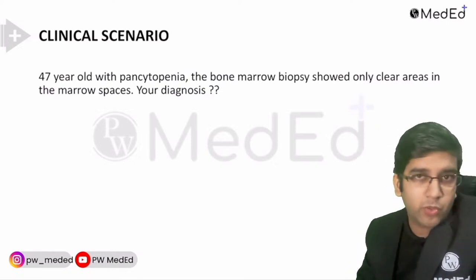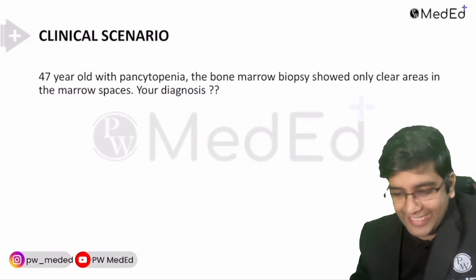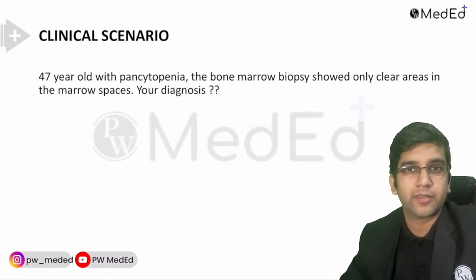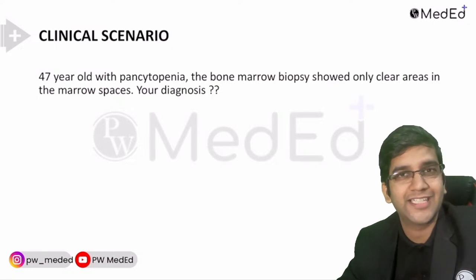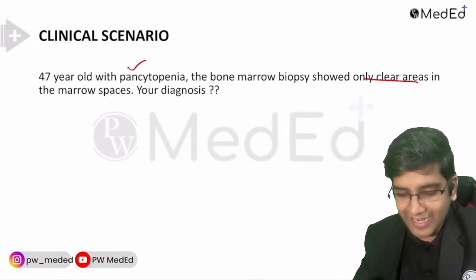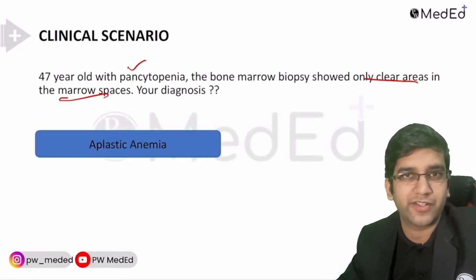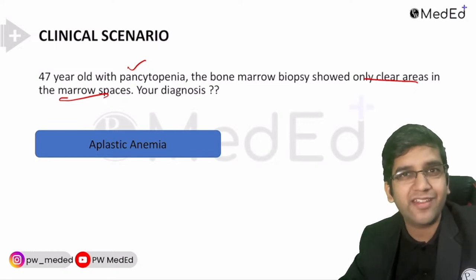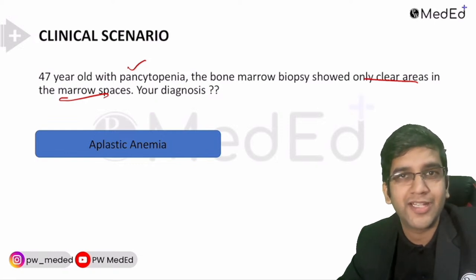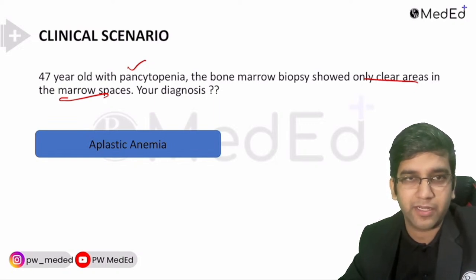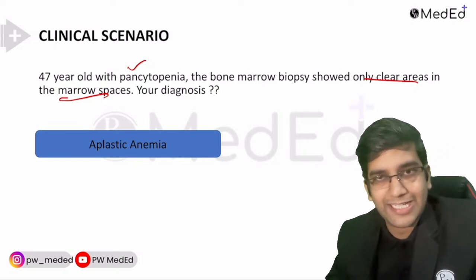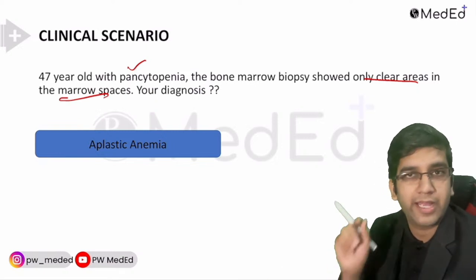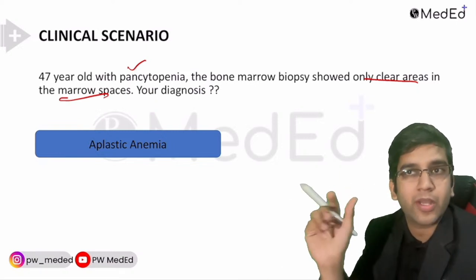47-year-old, pancytopenia. Bone marrow biopsy shows only clear areas in the bone marrow spaces — no cells. Diagnosis: aplastic anemia. The bone marrow has been replaced by fat (clear areas). It's not Burkitt's — that would have lots of cells. Clear areas replaced by fat in bone marrow = aplastic anemia.